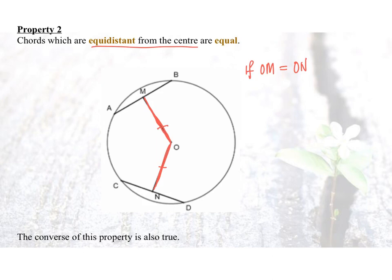If these two chords are equal in distance from the center of circle, then the length of AB will be the same as the length of CD.